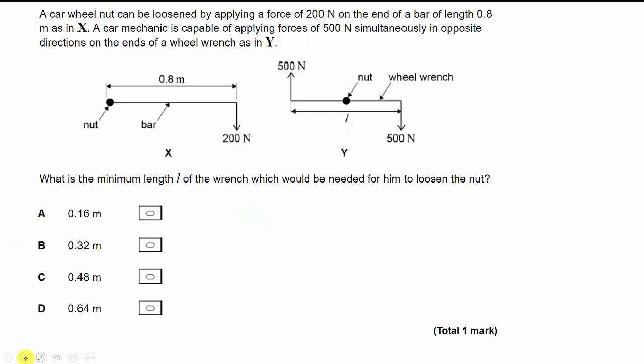Next question. Pause the video and read the question if you haven't already. The question says that a car wheel nut can be loosened by applying a force of 200 Newtons on the end of a bar of length 0.8. A car mechanic is capable of applying forces of 500 Newtons simultaneously in opposite directions on both ends of a wheel. As in Y. So this is what they're capable of doing.